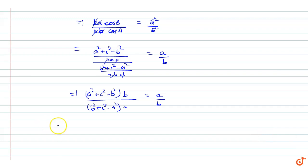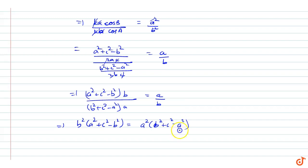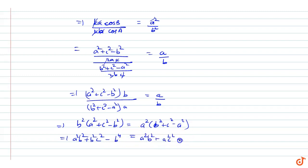Cross-multiplying, we get: b² · (a² + c² - b²) = a² · (b² + c² - a²). Expanding: a²b² + b²c² - b⁴ = a²b² + a²c² - a⁴. We cancel out a²b² from both sides.